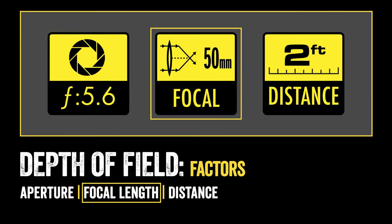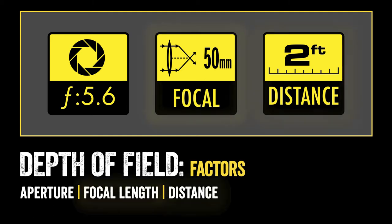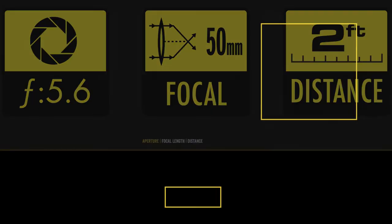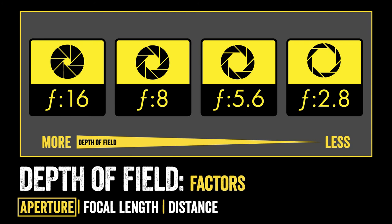Next we have the focal length. Focal length is the distance in millimeters from the end of the lens to where the light waves cross and come into sharp focus — in a camera, that would be on your sensor. As you increase and decrease the focal length of the lens, you will change the depth of field in your image. And last is the distance to subject — the distance from the end of the lens to the subject you're focusing on. As you increase or decrease that distance, you will also affect the depth of field. Next, we'll look at each of the three factors individually, starting with the aperture.